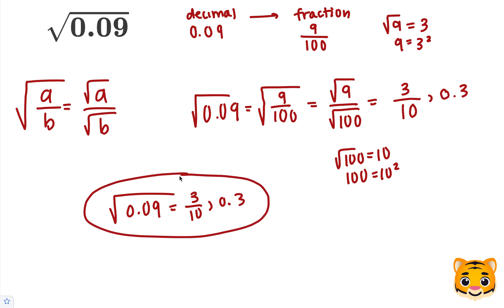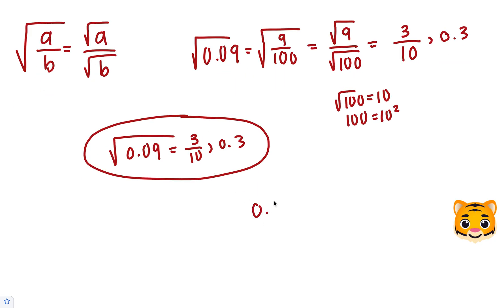Now to check our answer, we can multiply 0.3 times 0.3 and make sure that it's equal to 0.09. 3 times 3 is 9, 0 times 3 is 0, add our 0 placeholder, 0 times 3 is 0, and 0 times 0 is 0. Now we get 0.09.